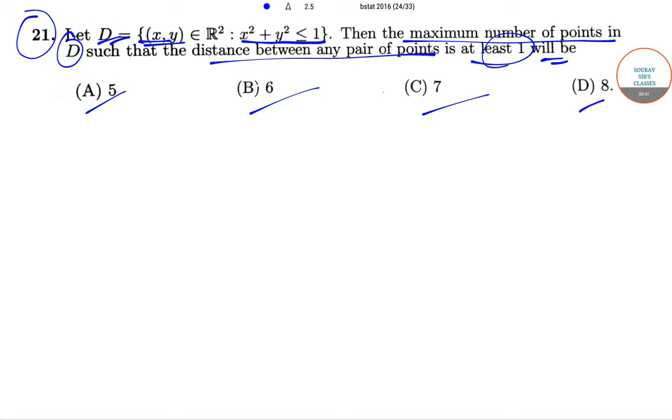So what we have been given: we have to find out the set of elements in the set D where the distance between any two pair points is at least one. We have been given that x² + y² is less than or equal to one. So first we need to draw this area.